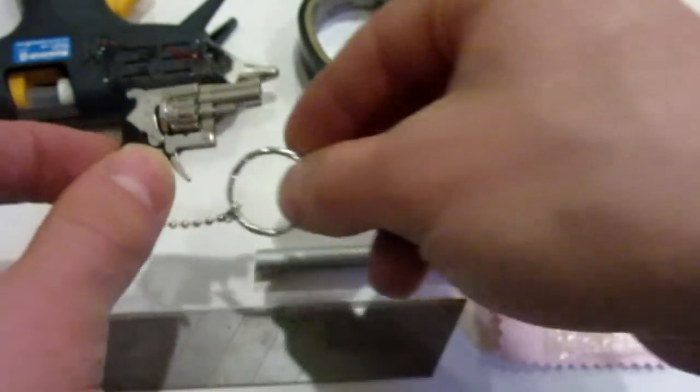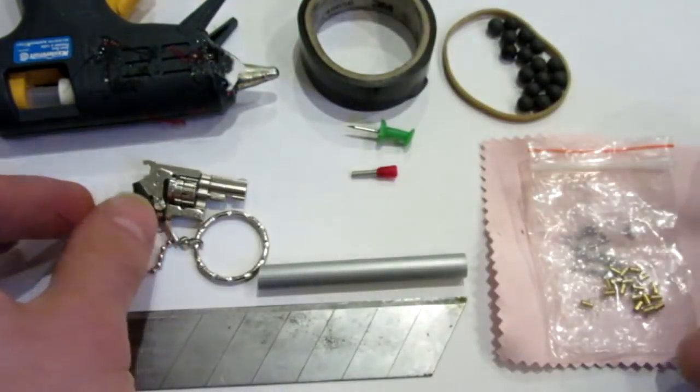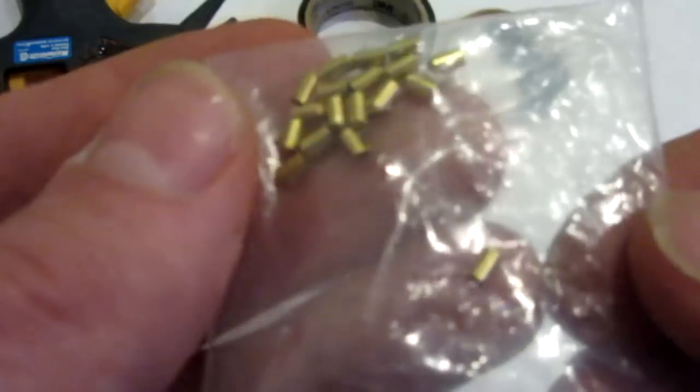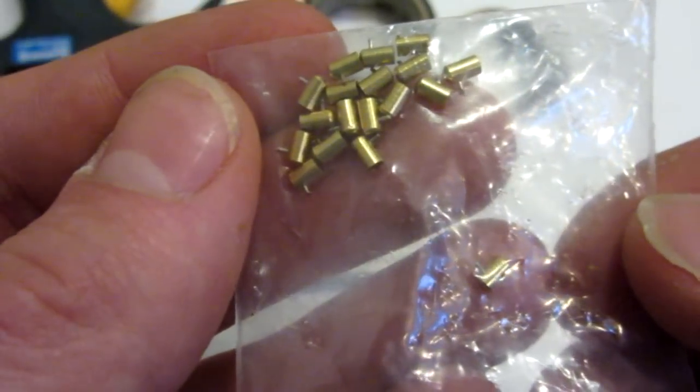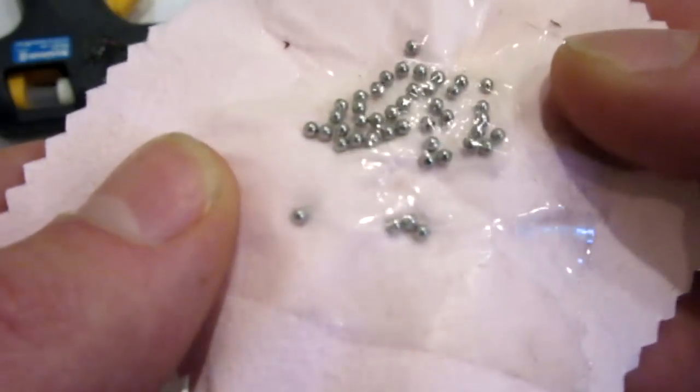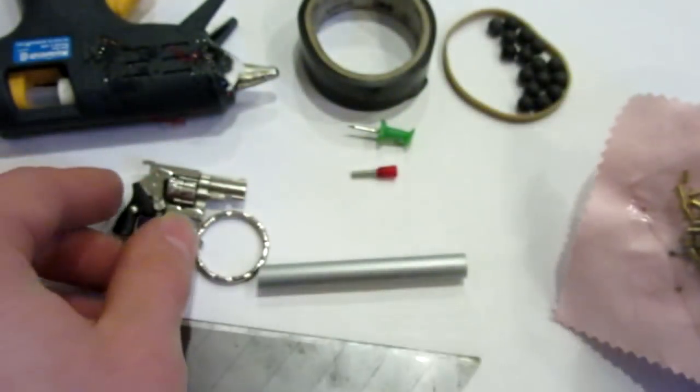So essentially, this here fires these very small shells. So these are like the blank pinfire shells. They're in plastic, so they're kind of hard to see. And then what you do is you just load one of these small ball bearings inside of the shell, right in the end like that. And then you load her up into the gun.